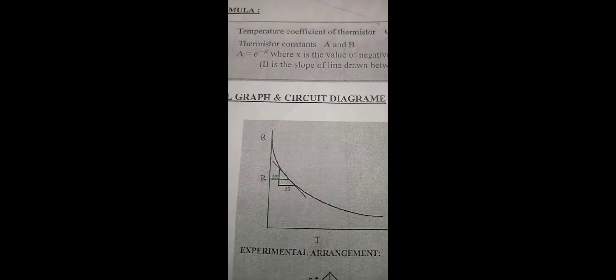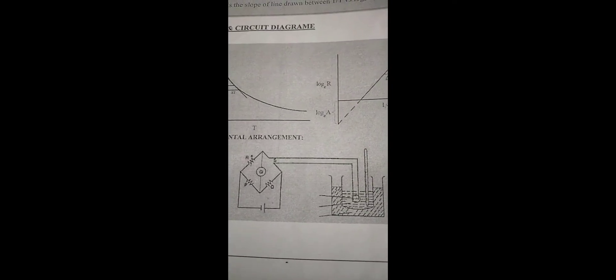The aim of this experiment is to draw the temperature versus resistance characteristics of a thermistor and to evaluate the thermistor constants. We are going to find out alpha, which is called the thermistor coefficient. A and B are thermistor constants — we are going to take them out from the graphs. Alpha is found from the first graph, and A and B from the second graph.